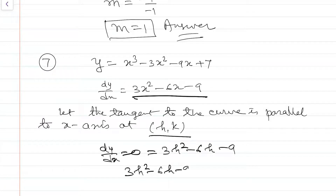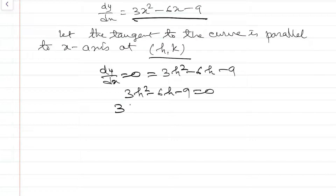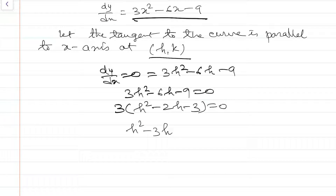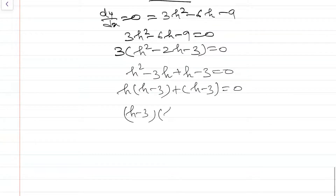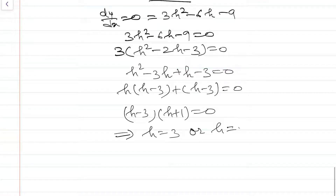Taking 3 common: h² - 2h - 3 = 0. Factoring: h² - 3h + h - 3 = 0, so h(h - 3) + 1(h - 3) = 0, giving (h - 3)(h + 1) = 0. This implies h = 3 or h = -1. These are the possible x-values where the tangent may be parallel to the x-axis. But we need to find the full points.